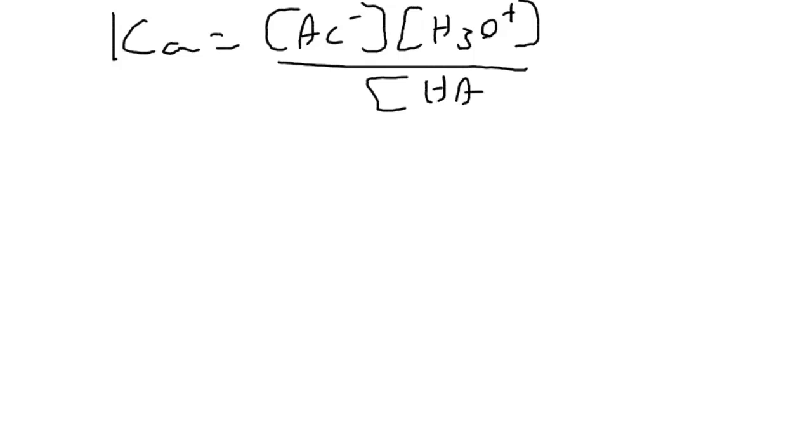Now we'll put that into the equilibrium expression. So for acetic acid, the Ka is going to be concentration, the equilibrium concentration of acetate, times the equilibrium concentration of hydronium H3O+, divided by the equilibrium concentration of acetic acid. Now we can look that up, and we have a value for that of 1.75 times 10 to the minus 5.